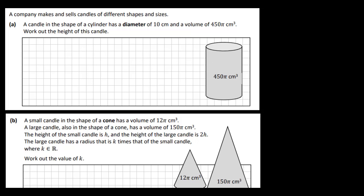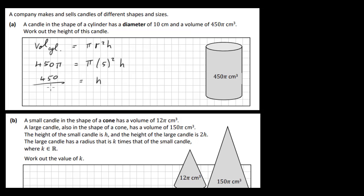This is reasonably straightforward. We look at the volume of a cylinder formula: V = πr²h. We're given the volume as 450π, and the diameter is 10, so the radius is 5. Substituting: 450π = π × 25 × h. The π's cancel, so h = 450 ÷ 25 = 18 cm.